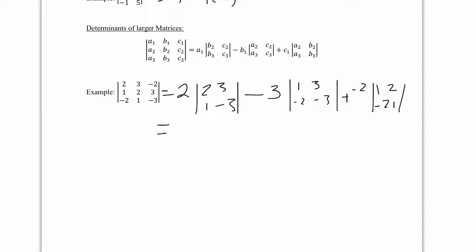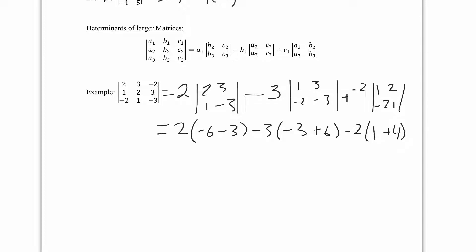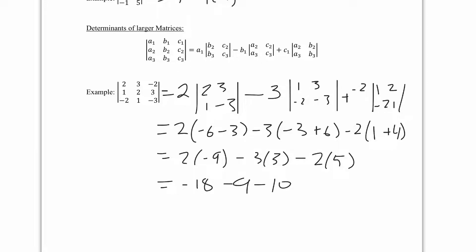Now we compute each smaller determinant: 2 times negative 3 minus 3 times 1 gives negative 9; 1 times negative 3 minus negative 6 gives 3; and 1 times 1 minus negative 4 gives 5. So the full result is 2 times negative 9, minus 3 times 3, minus 2 times 5, giving negative 18 minus 9 minus 10, which equals negative 37.